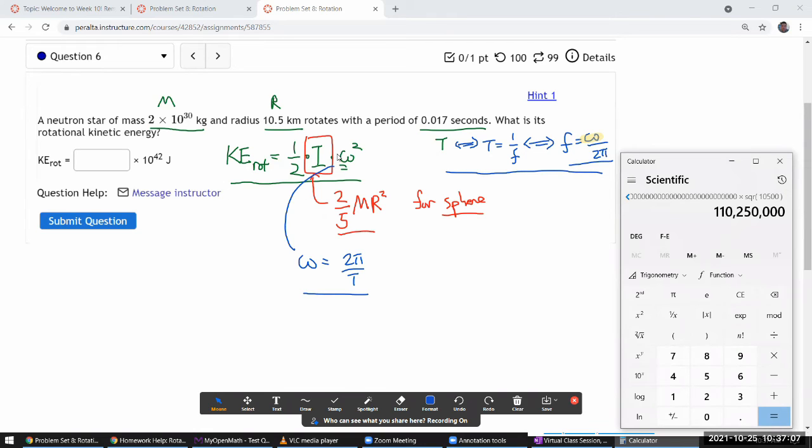So that's I times omega. I'm going to need the parenthesis here. Open parenthesis, 2 times pi divided by the period, 0.017 seconds, parenthesis closed, squared. And I think there's a square thing out there. Okay, I think that's everything. Let me type in equals. I get the huge number, 6.02 times 10 to the 42. Oh, 10 to the 42, okay, that matches. Great. So I just need to put in 6.02.